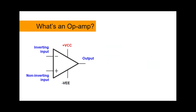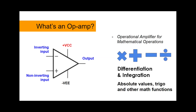So first, what is an op-amp? It is an integrated circuit that has two inputs and one output. We have the inverting input, the non-inverting input, and output. Then we have to provide the voltage sources, positive VCC and negative VEE, to power up this device. Why is it called an op-amp? It is actually a short version of operational amplifier, which means it can do different mathematical operations. By connecting them in certain ways, you can actually make an analog computer.